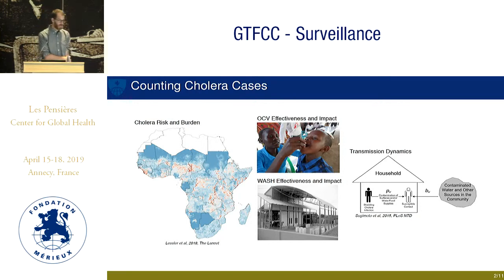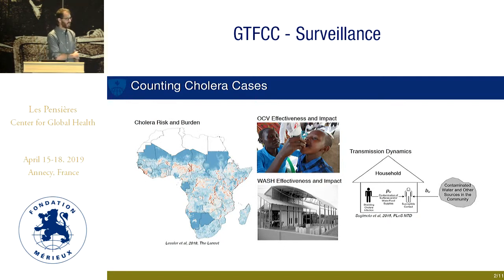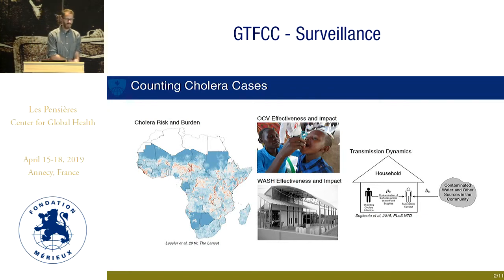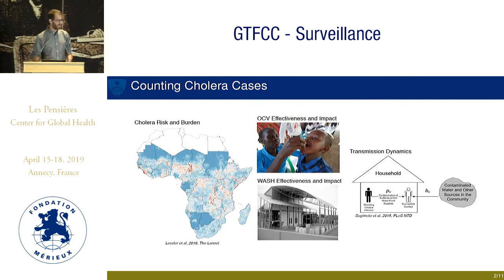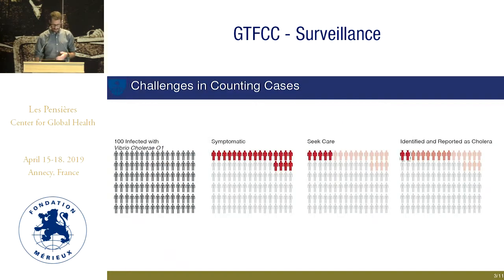We have many uses for this here and in public health departments in terms of characterizing risk, measuring how well different interventions work, and understanding the epidemiology of cholera in general. To do any of these things, we need to be able to quantify how many cases or quantify transmission. And we struggle with that, both because of the natural history of cholera and also because of our surveillance systems.